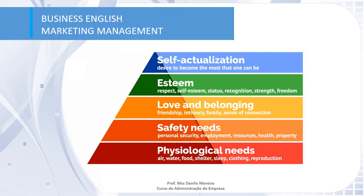Safety needs include personal security, employment, resources, health, and property. After that, we move up to love and belonging — the sense of belonging to a group of people, such as friends, family, and connection between groups. For example, studying at a university gives you a sense of connection.